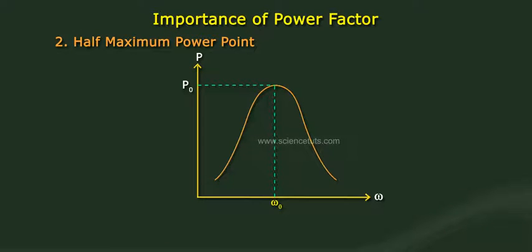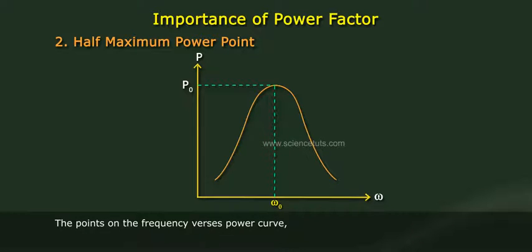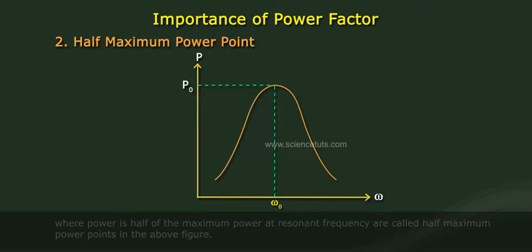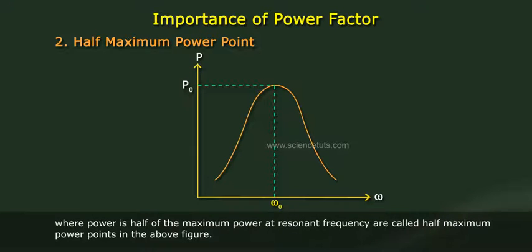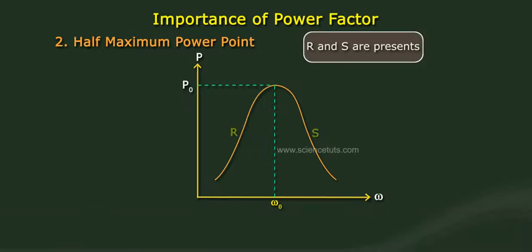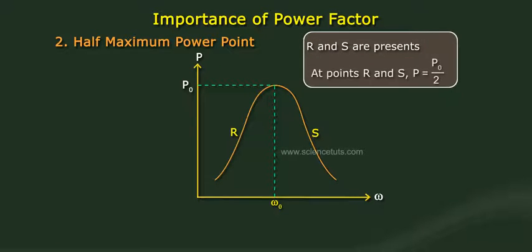Point 2: Half maximum power points. The points on the frequency versus power curve where power is half of the maximum power at resonant frequency are called half maximum power points. In the above figure, these are marked as R and S, where P equals P₀/2.